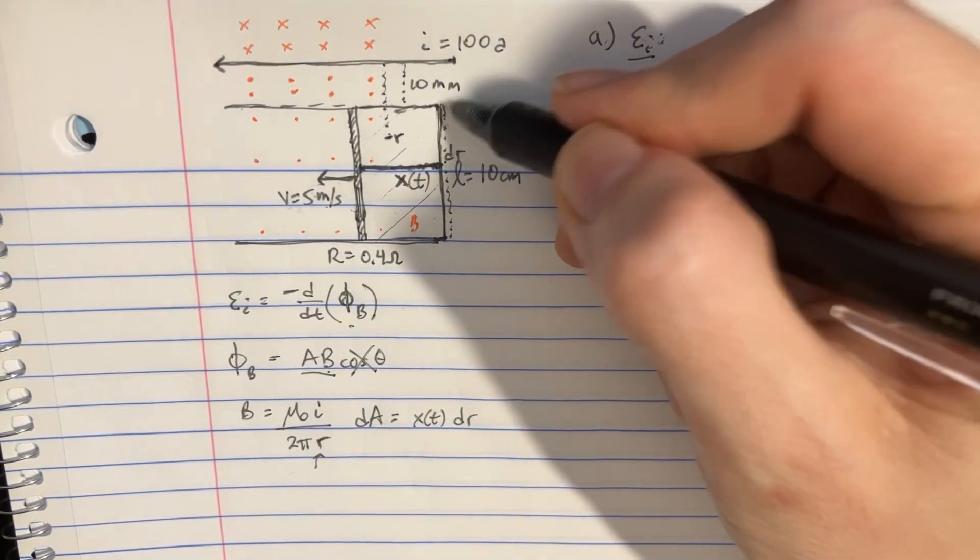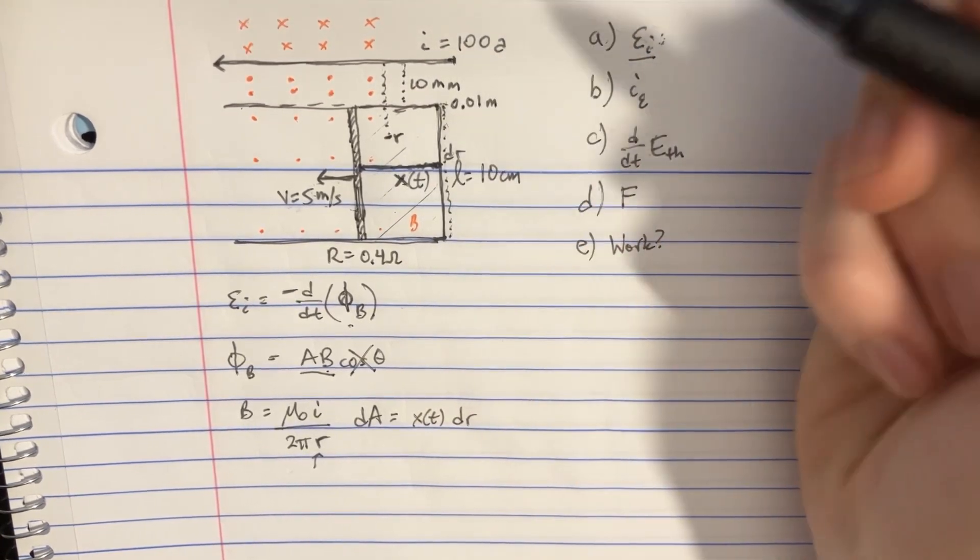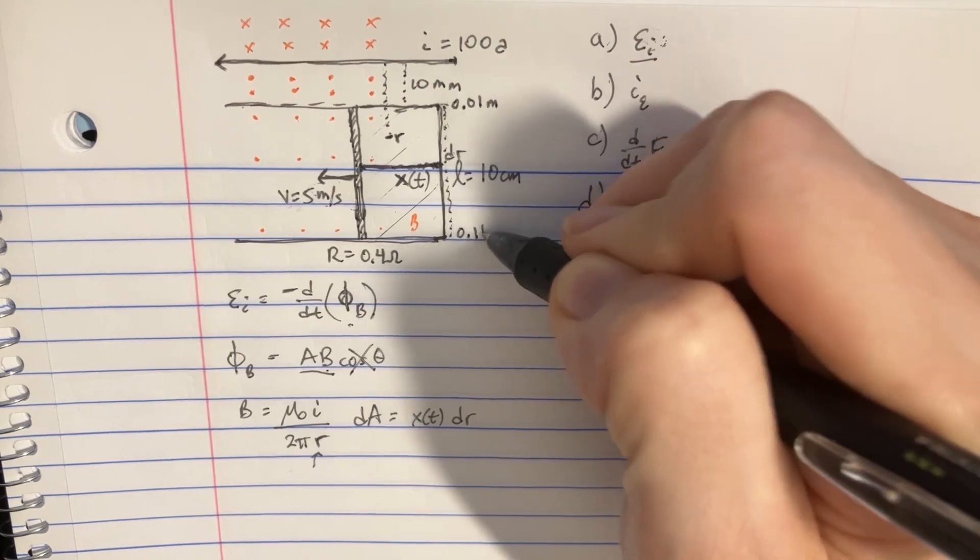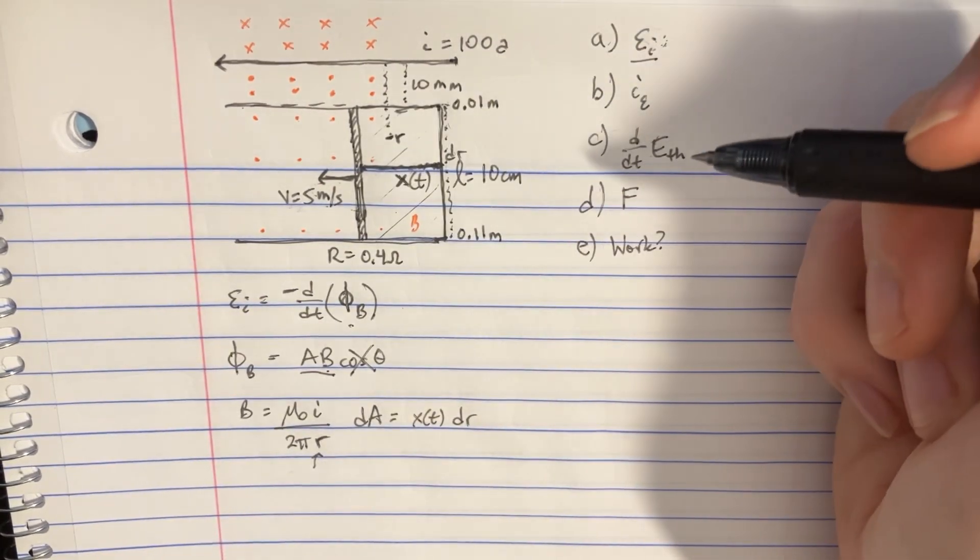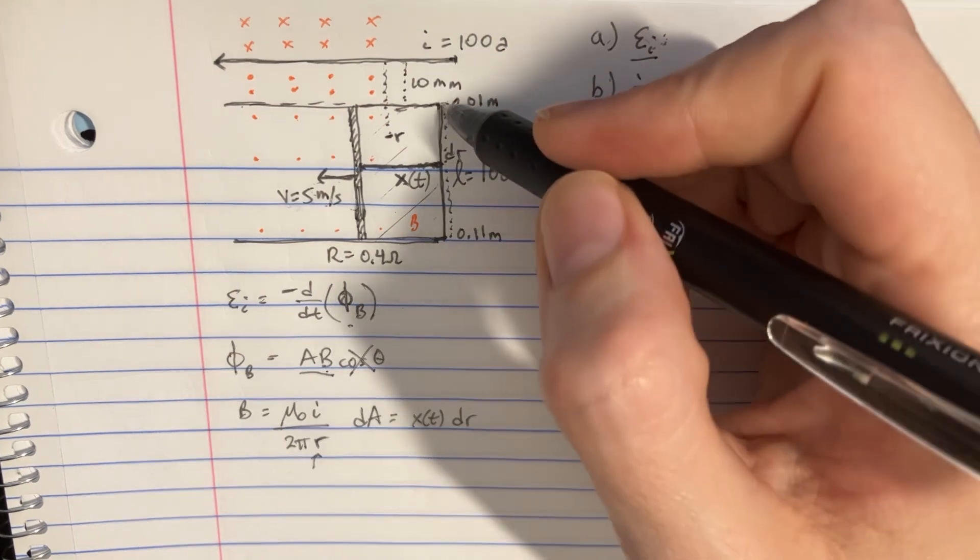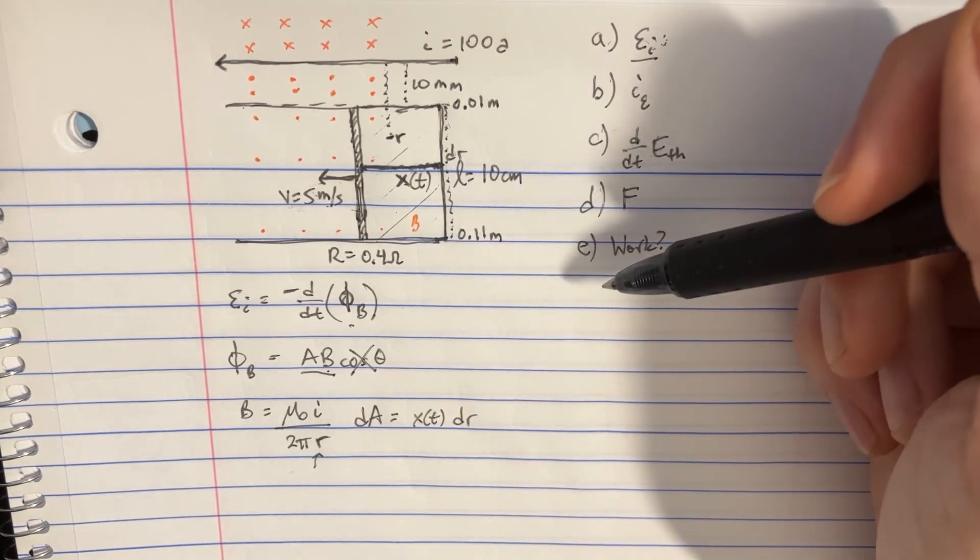And you would want to integrate from here, which is going to be essentially 0.01 meters, until over here, which is 0.11 meters. It's going to be 10 centimeters, and this is going to be 10 millimeters away. So that's how we can create this area with that expression right there.